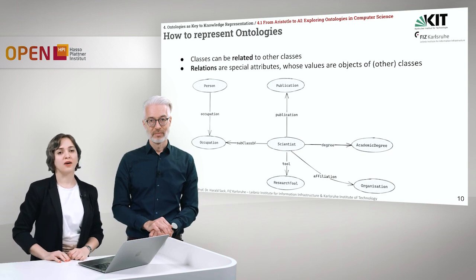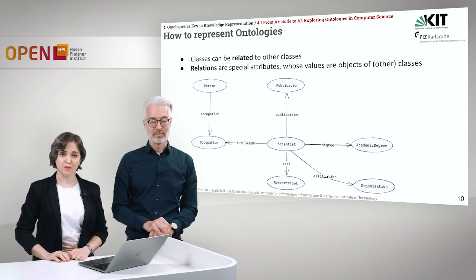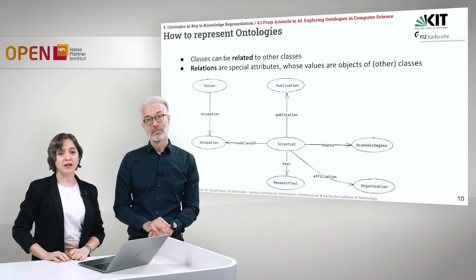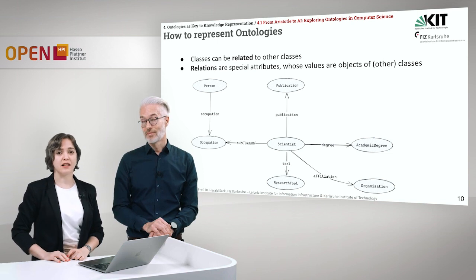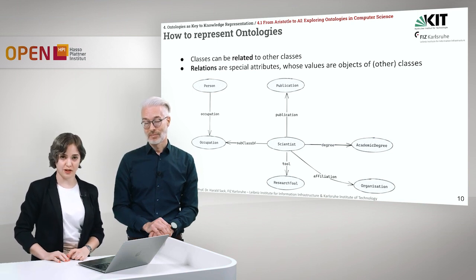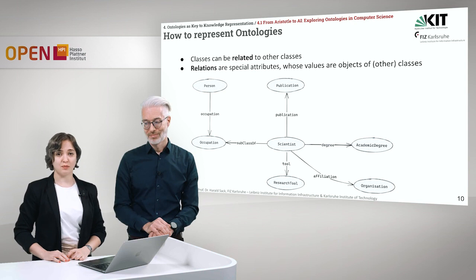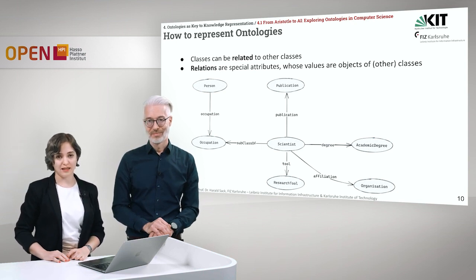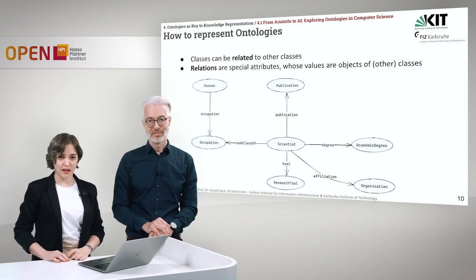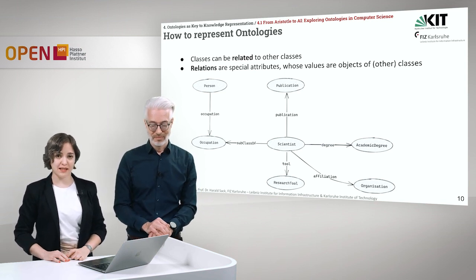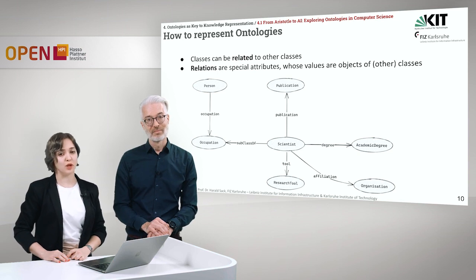There are also special attributes that relate two classes to one another. For example, the class scientist is connected to the class publication via a special attribute called publication. We call these special attributes relations — they are attributes whose values are objects of other classes. As another example of a relation, you can see the subclass-of relation: scientist is a subclass of occupation, and these two classes are connected via the relation subclass-of.